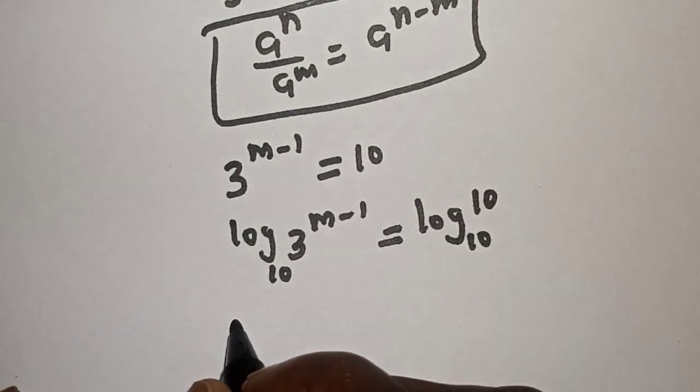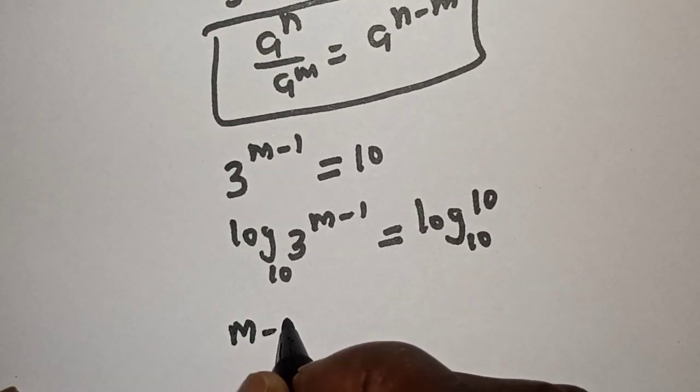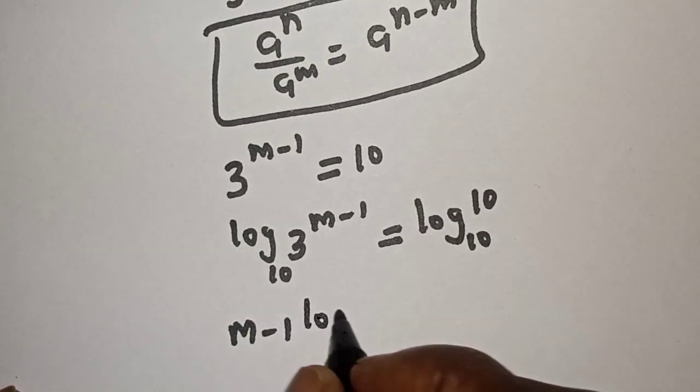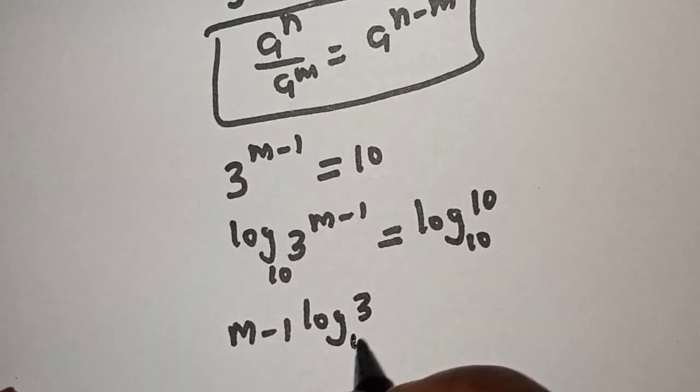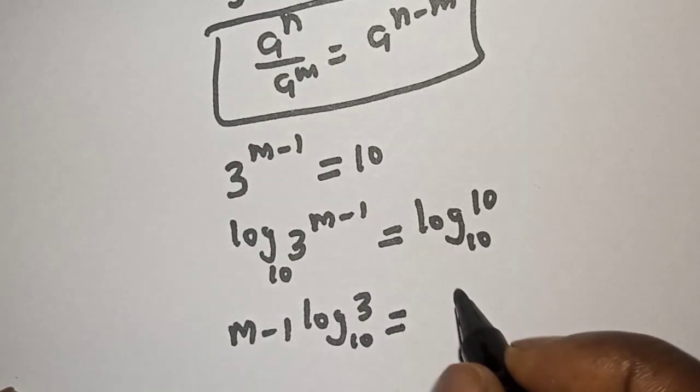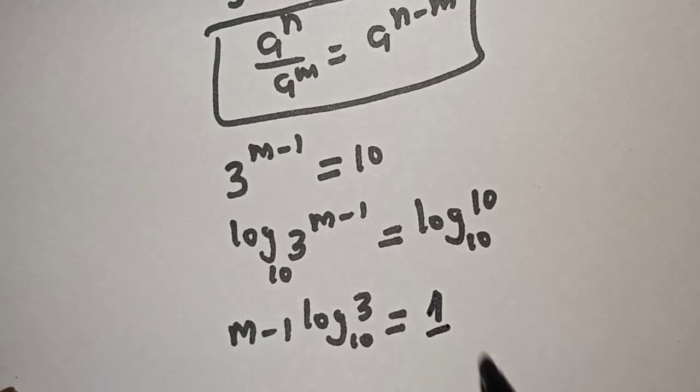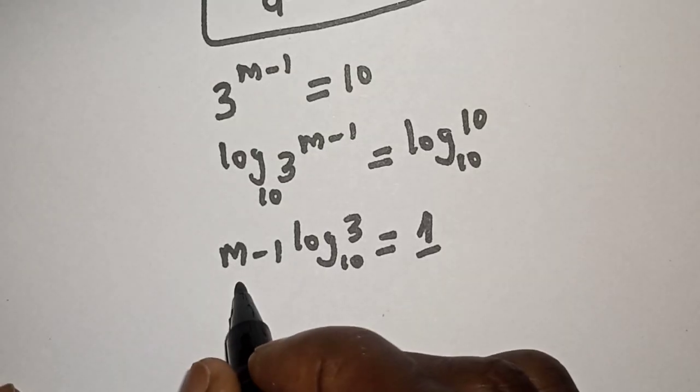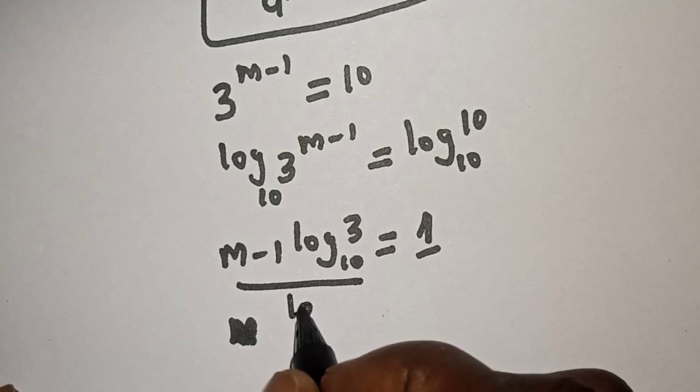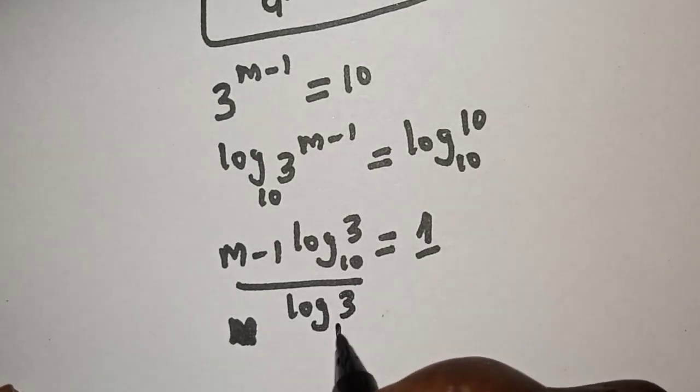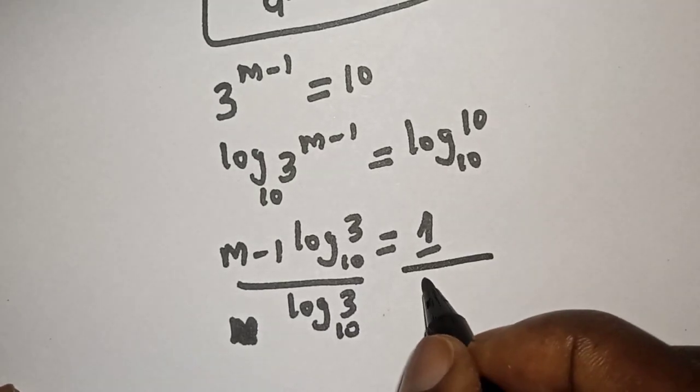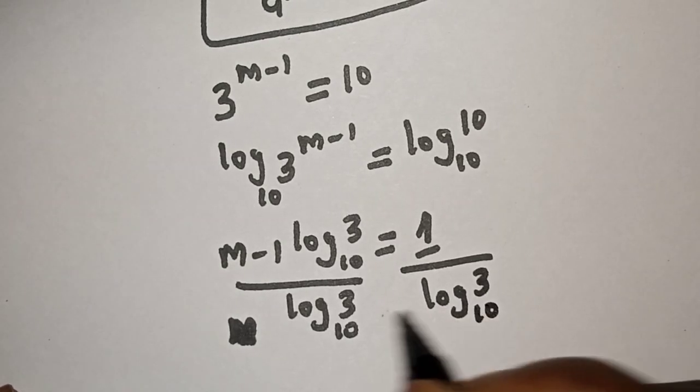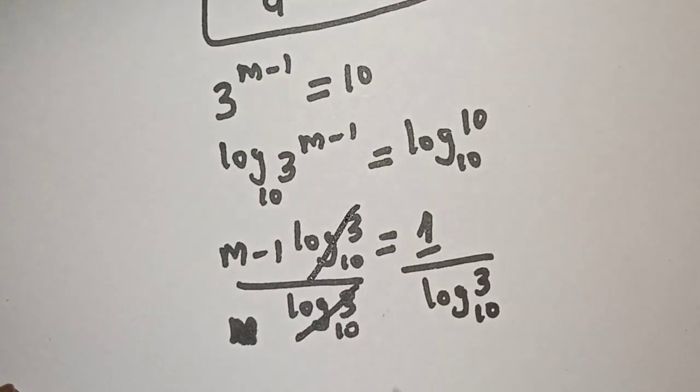And this is m minus 1 times log 3 base 10, is equal to log 10 base 10, which is 1. And let's divide both sides by log 3 base 10. This one will cancel this.